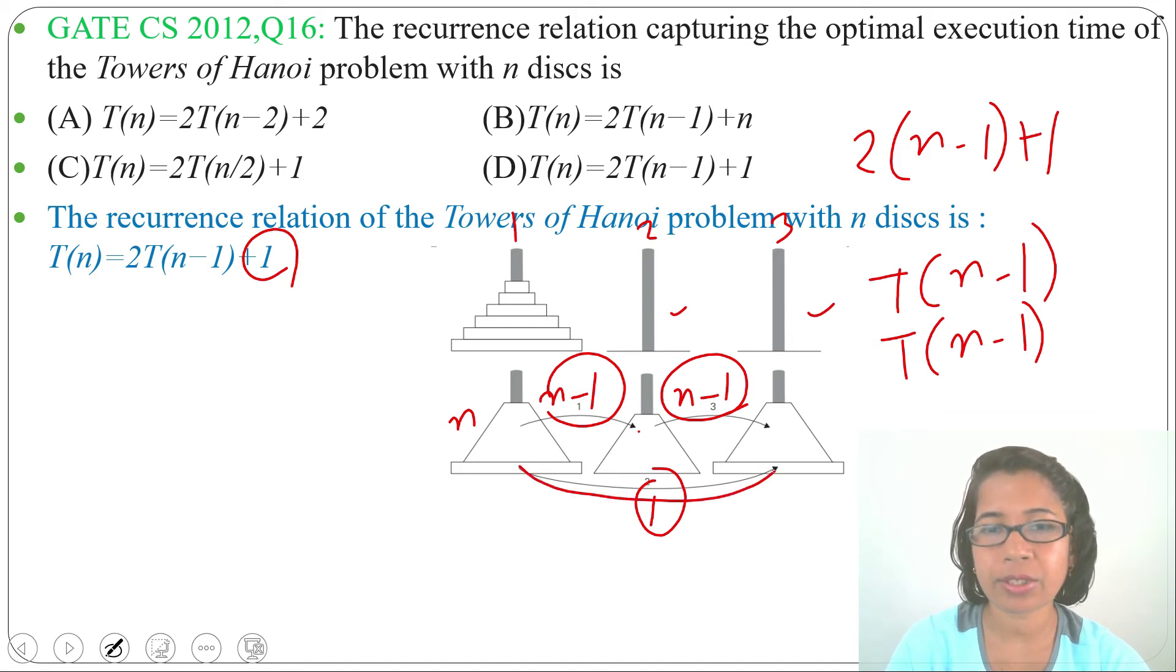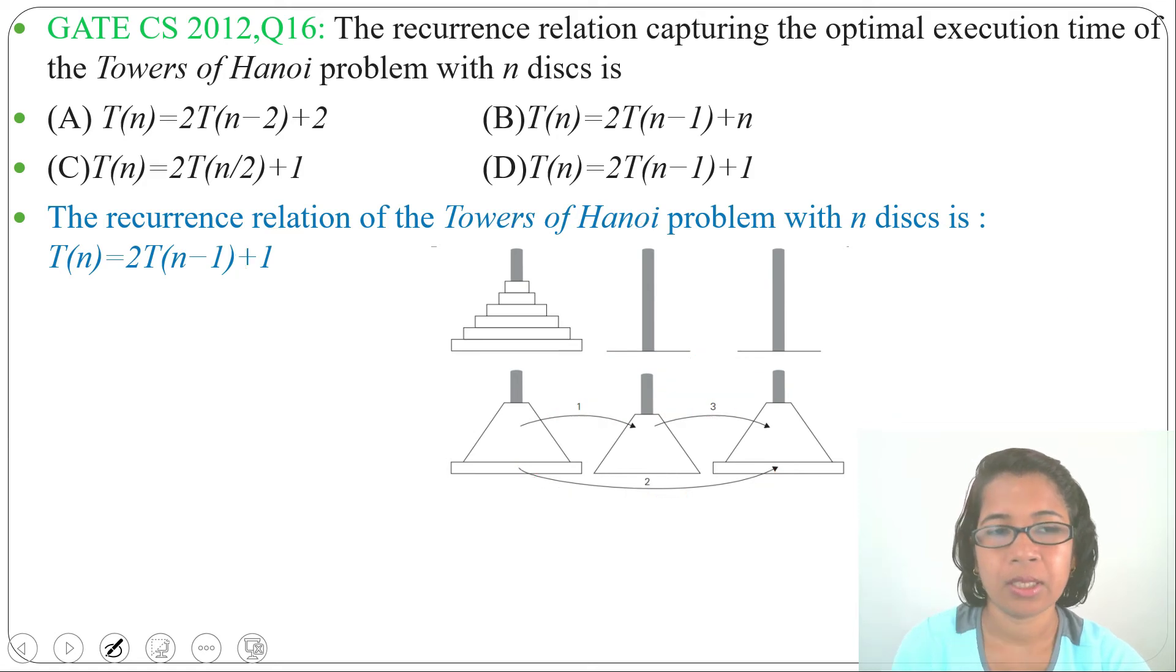I already discussed Tower of Hanoi, just go through the Tower of Hanoi lecture to understand. So here the recurrence relation is T(n) = 2T(n-1) + 1. Now check in which option it is present.